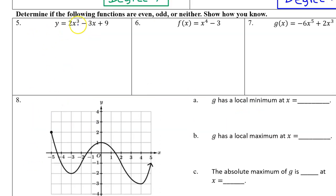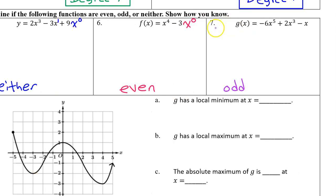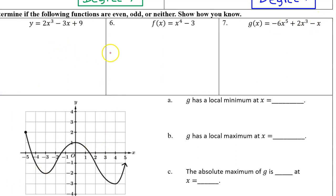Looking at number 5: the exponent of 3 is odd, the next term has an exponent of 1, still odd, but the constant is really 9x to the 0 power — that's even. Because we have a mixture of odd and even exponents, this will be neither. At a glance, function 6 is even because it has all even exponents: the 4, and the constant is x to the 0 power — even and even. Number 7 will be an odd function because we have all odd exponents: 5, 3, and 1.